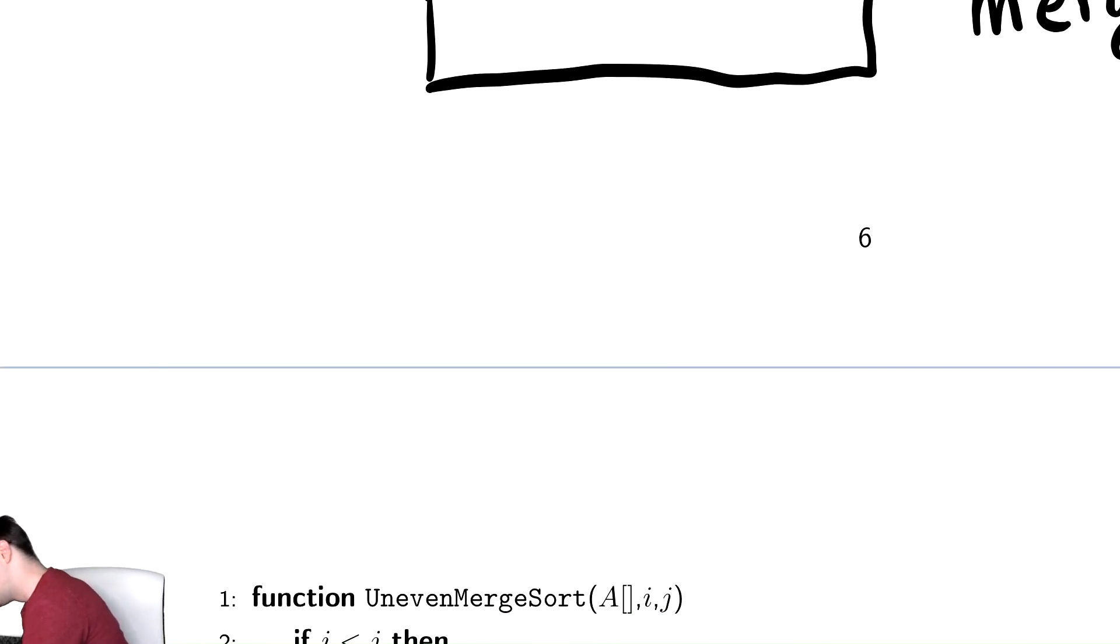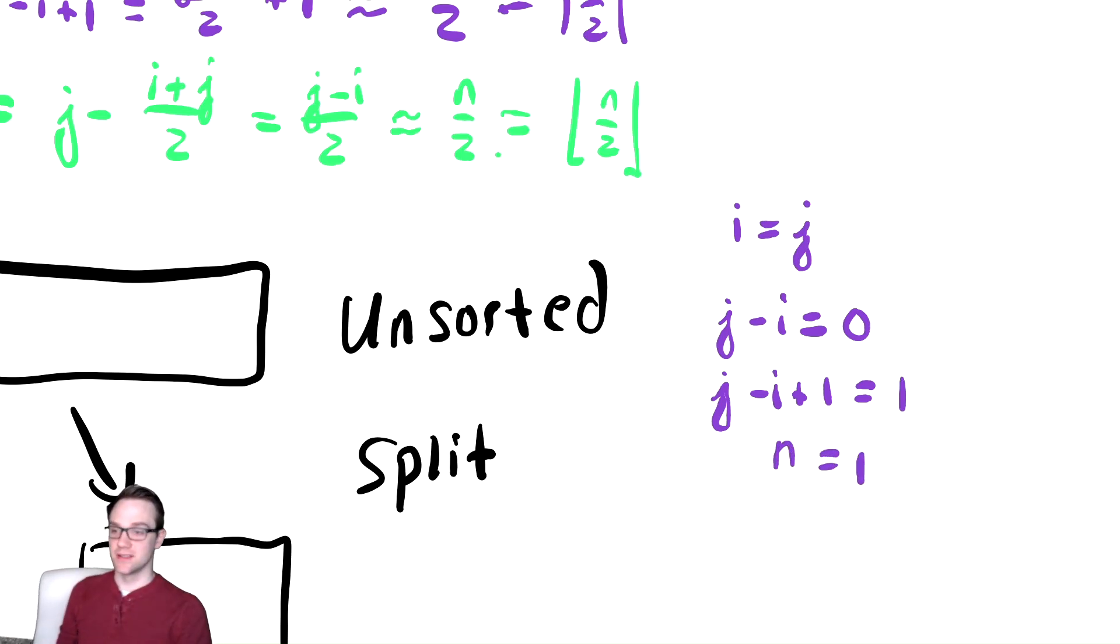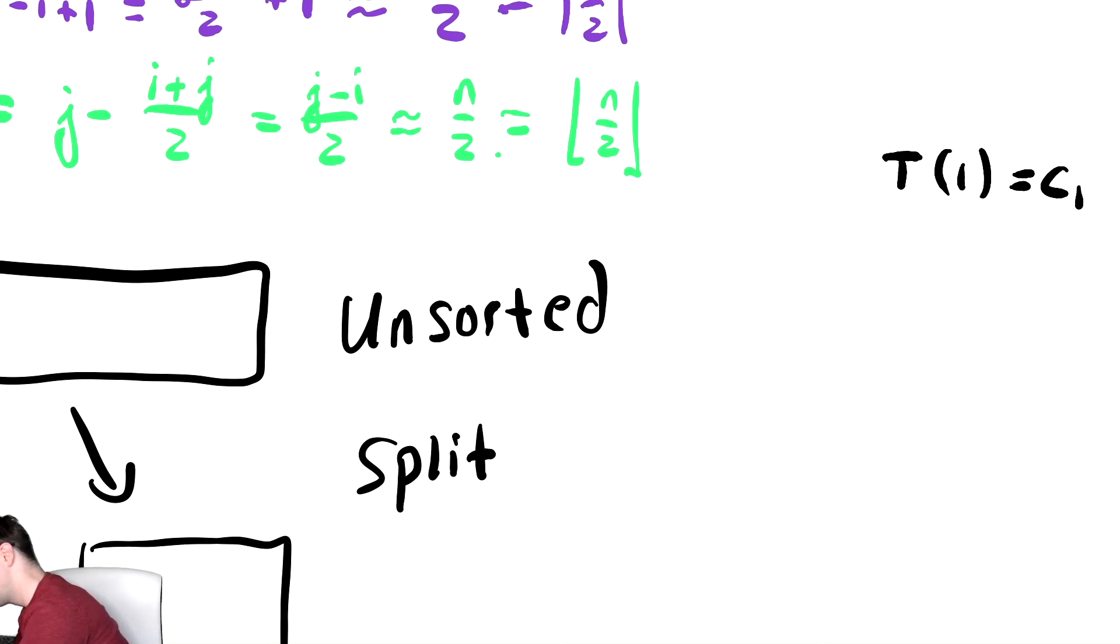Our base case was i less than j, just like we did before. That's going to stop when i equals j, which is j minus i equals zero. Add one to both sides: j minus i plus one equals one, which is n equals one. That's our base case. So our base case for our recursion is going to be T of 1 is equal to some constant c1.